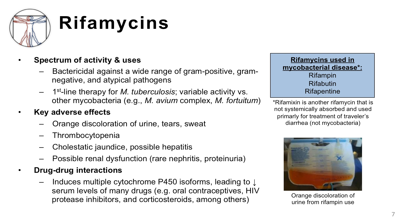Rifaximin is used primarily as a second-line agent for gastroenteritis, especially traveler's diarrhea. Adverse effects of rifamycins include orange discoloration of the urine, sweat, or tears, as seen in the lower right-hand picture. Thrombocytopenia, which is decreased platelets; hepatic effects such as non-obstructive cholestasis with increased bilirubin in the blood, and rarely drug-induced hepatitis; and renal dysfunction, which is rare. Finally, this class can induce the metabolism of other drugs metabolized by the cytochrome P450 system, leading to important drug-drug interactions that decrease serum levels of other drugs to potentially non-therapeutic levels.